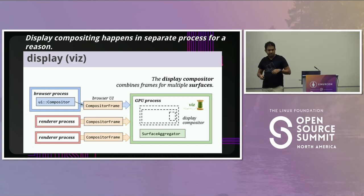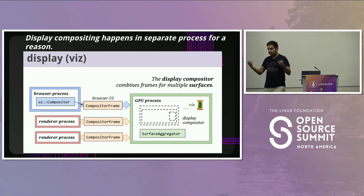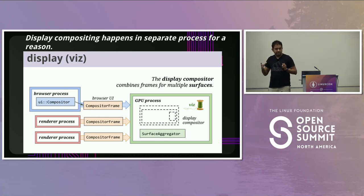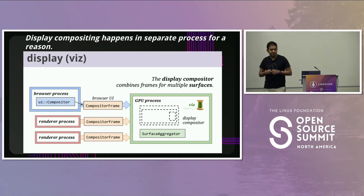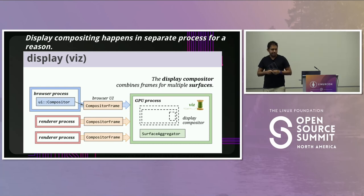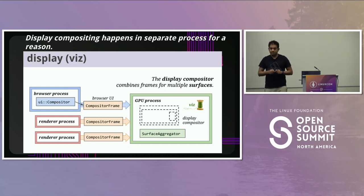The GPU process — the VIZ process — accepts compositor frames from the render processes and the browser process. It does display compositing: combining frames from multiple sources, aggregating them and showing them on screen. The main point here is there's a lot going on — a lot of processes — and the scheduler has a very important role in making sure the system is performing properly.